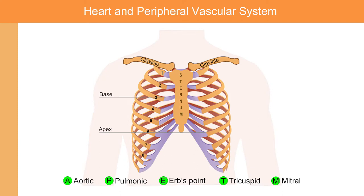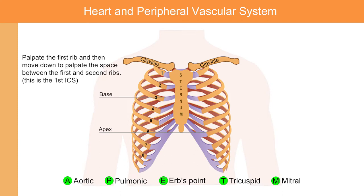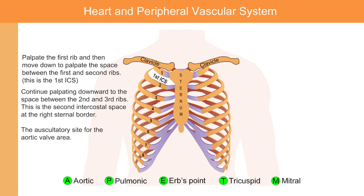When auscultating from base to apex, palpate the first rib and then move down to palpate the space between the first and second ribs. This is the first intercostal space. Continue palpating downward to the space between the second and third ribs — this is the second intercostal space at the right sternal border.